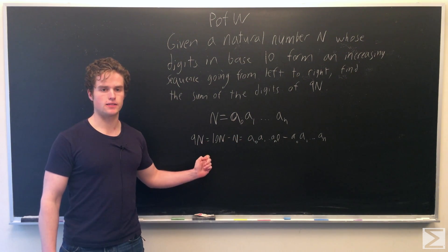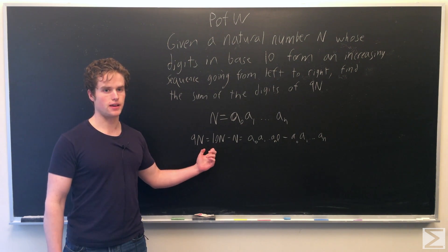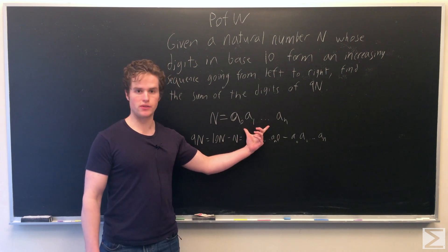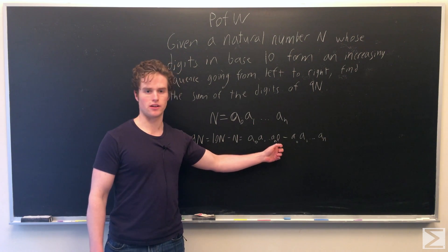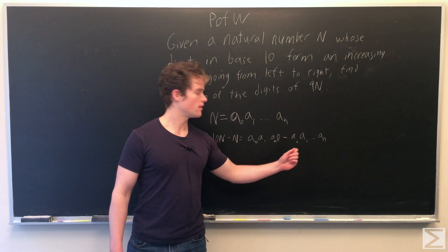So we are going to note that 9n is in fact just 10n minus n, and 10n in base 10, we can conveniently write that as the previous n with a 0 tagged on at the end, and we are subtracting from that a0, a1, ..., an.